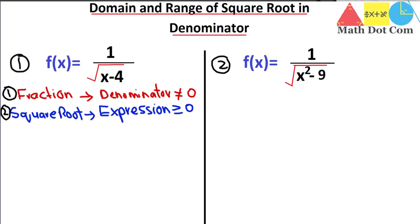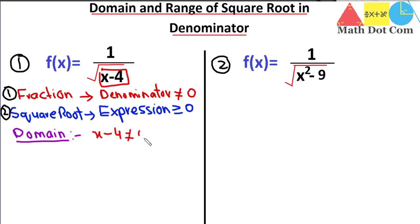Let's find the domain first by applying both conditions. Applying condition one — the denominator should not be equal to zero — the denominator here is x minus four. So x minus four should not equal zero, which means x should not equal four. This is condition number one.